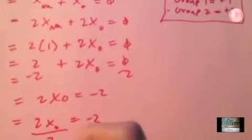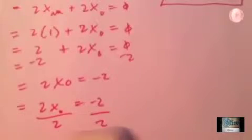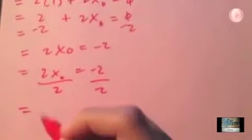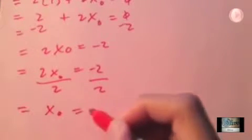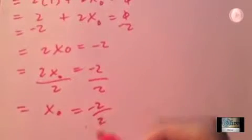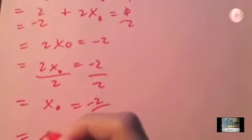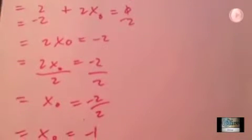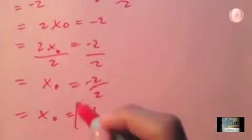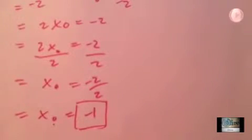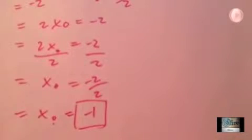So you divide, because you're trying to find the oxidation state. Anything divided by itself is one. So that's it, that's the oxidation state for oxygen: negative one.